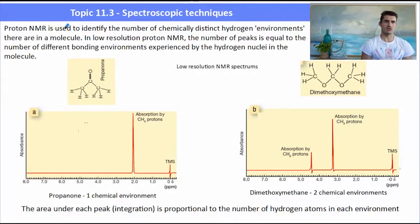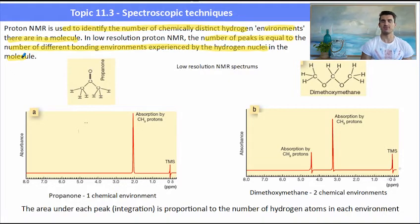Proton NMR is used to determine the number of distinct chemical environments in a molecule. The number of peaks in an NMR tells us the number of different hydrogen environments in the molecule. So here we have propanone and I've got the formula there. If we run propanone through the NMR we see one peak. That means we have one chemical environment, one environment for the protons.